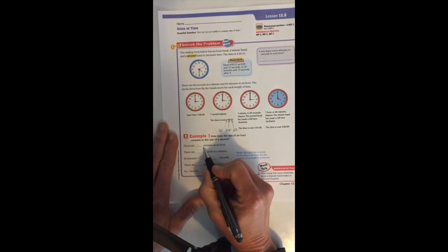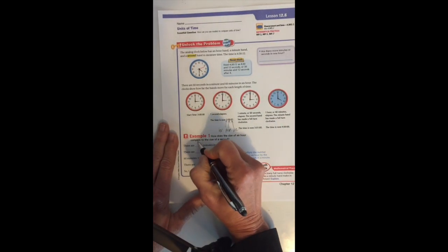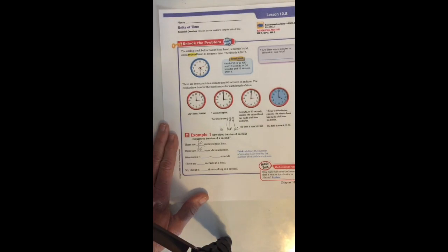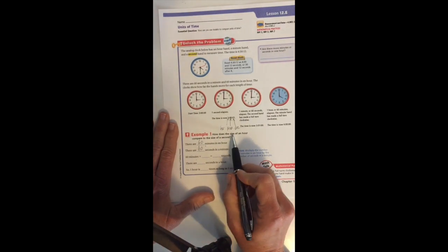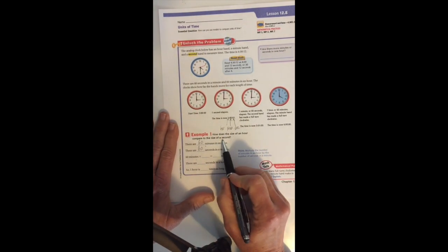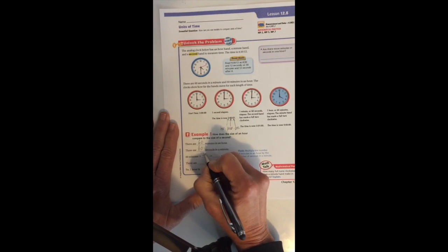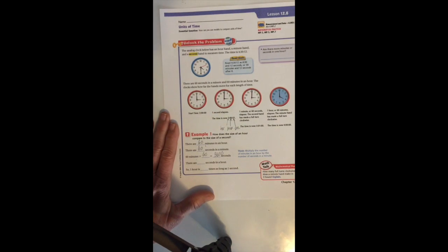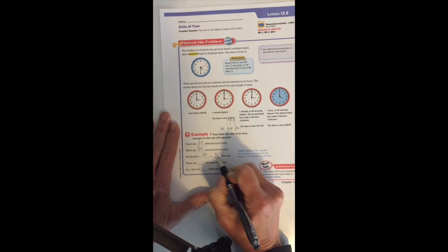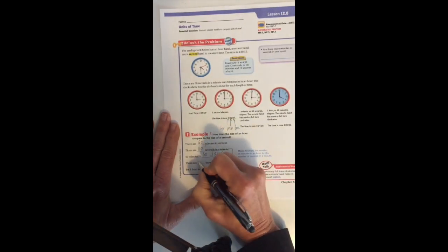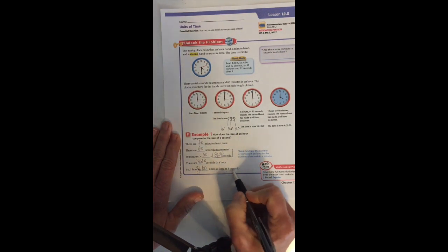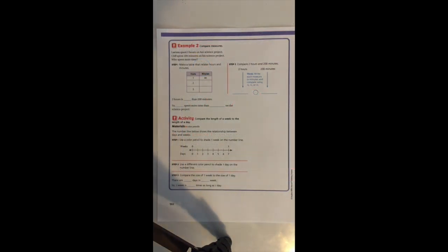Let's go down to the example here. There are 60 minutes in one hour and 60 seconds in one minute. So if we were to compare the size of an hour to the size of a second, 60 minutes times 60 seconds would give us 3,600 seconds. That means an hour is 3,600 times as long as one second.